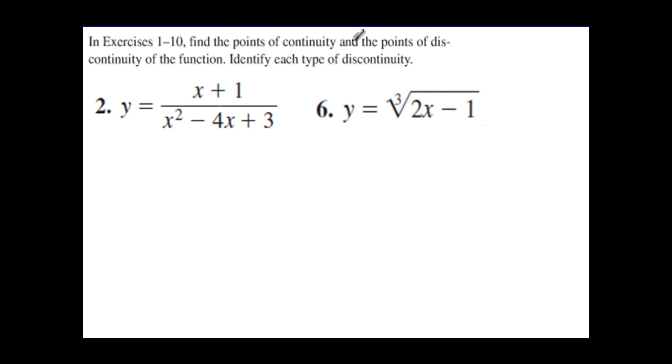In exercises 1 through 10, find the points of continuity and the points of discontinuity of the function. Identify each type of discontinuity. We have y = (x + 1)/(x² - 4x + 3). For this one, I'm going to factor the denominator. We have (x - 3)(x - 1).